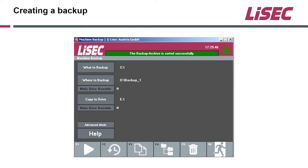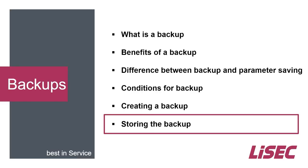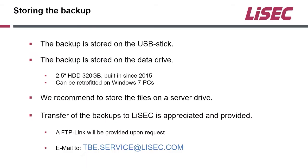If you get an error message, you have two possibilities. First, start the whole thing again. If the error message is the same or a different one, it may be that the hard disk is already damaged to a point where it cannot be done automatically. In that case, please call our service hotline and we will guide you through the remaining process. But in 99 — nearly 100 — percent of cases you will get the success message and everything is done.